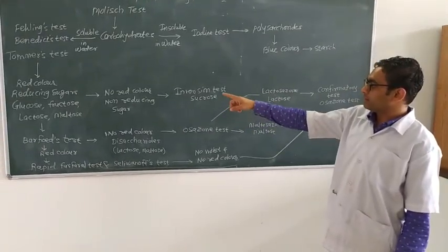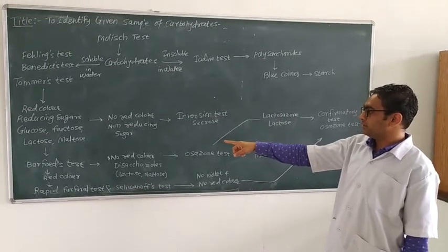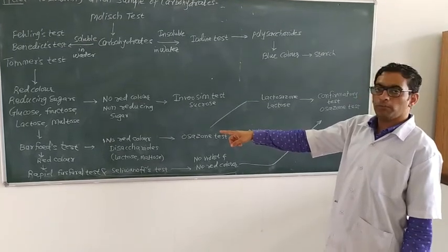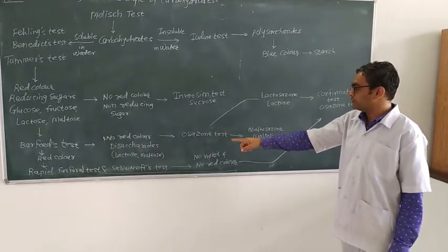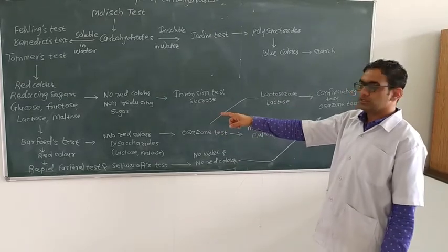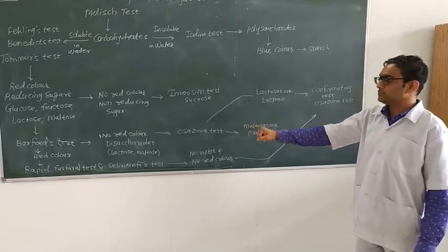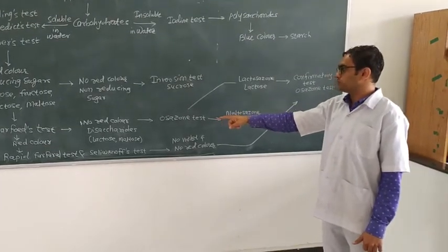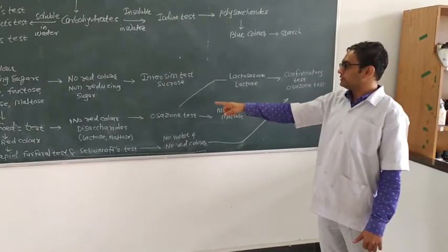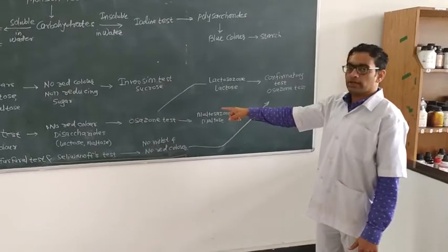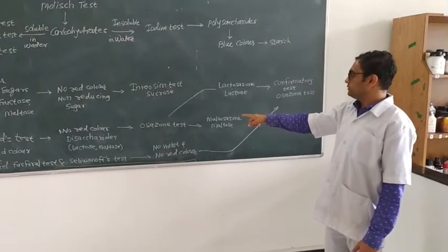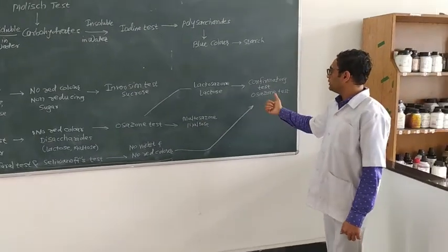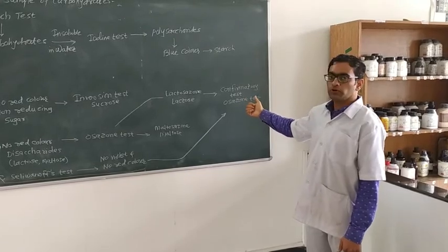After confirming a reducing sugar, we perform the Barfoed test. If the Barfoed test is positive, showing red color, then we perform the rapid peripheral test and Seliwanoff test. If the Barfoed test is negative — no red color produced — that indicates a disaccharide. Examples of disaccharides are lactose and maltose. After the disaccharide test, we perform the Osazone test. After the rapid peripheral test is negative, we again go to the confirmatory Osazone test.